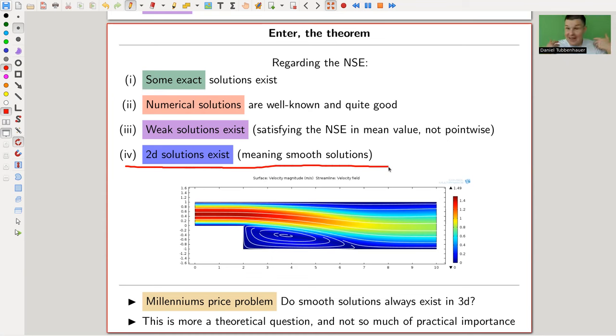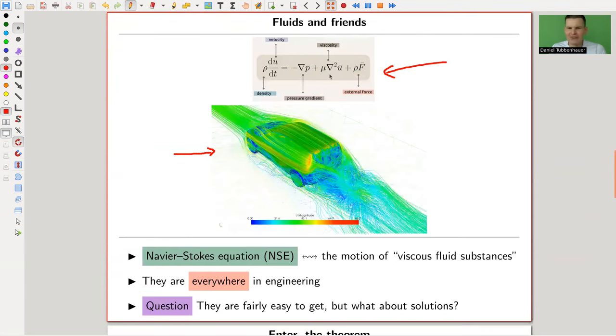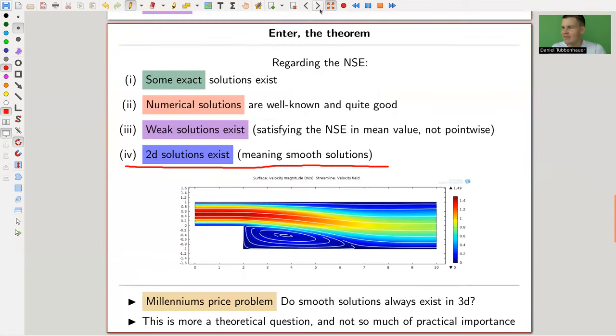But in 3D we still don't know the existence of nice solutions, and that's essentially the problem that would give you a million bucks. Can you solve this equation here which looks harmless but is really condensed, or just prove existence of certain nice solutions?